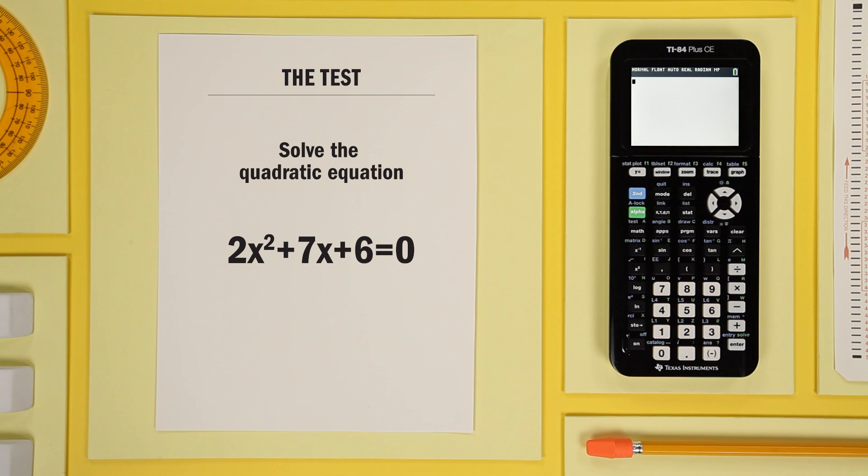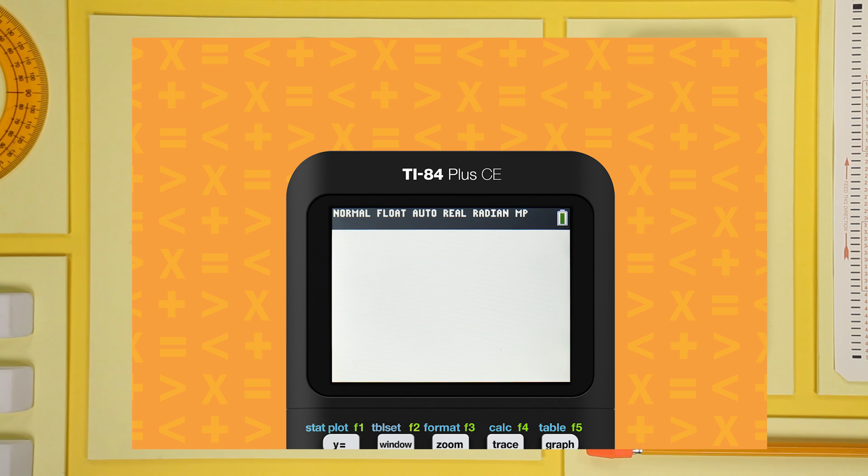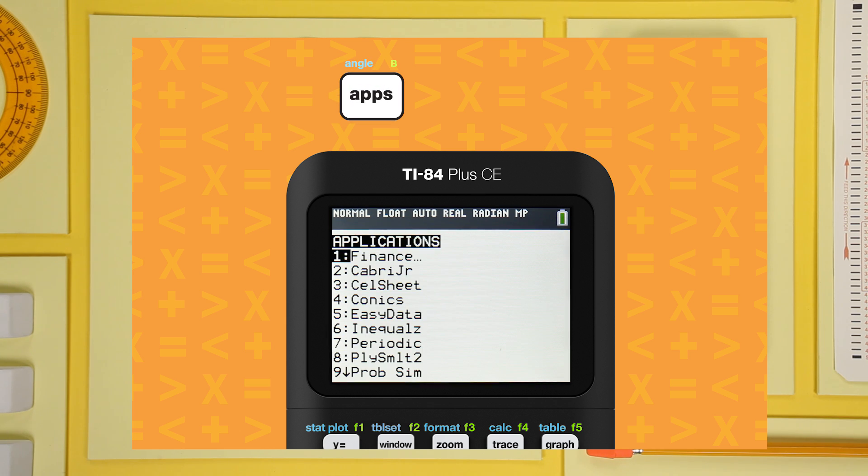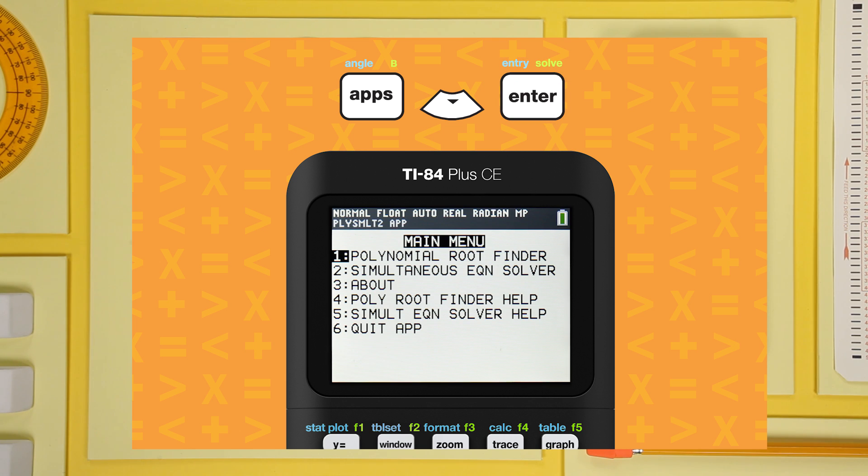It's great for finding roots of polynomials. Before we solve this problem, let's take a look at the app. Start by opening the app menu by pressing the apps button. Select polysymult 2 and enter to open the app.